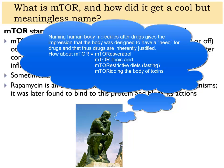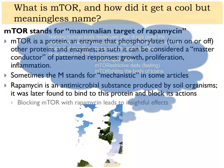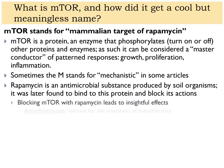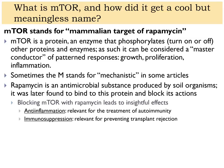Other things also inhibit mTOR starting with 'R' — resveratrol blocks the mTOR pathway, so we could have called it Mammalian Target of Resveratrol, and R-lipoic acid also blocks the same pathway. I've discussed this in a digital book I published called Mastering mTOR. The 'R' could also stand for restrictive diets, since fasting blocks mTOR's action, or for ridding the body of toxic chemicals.